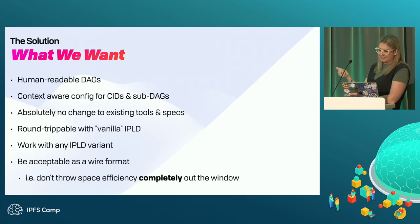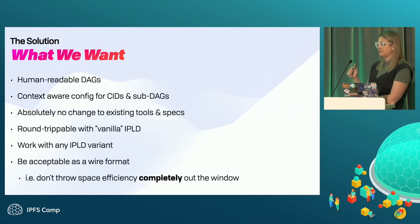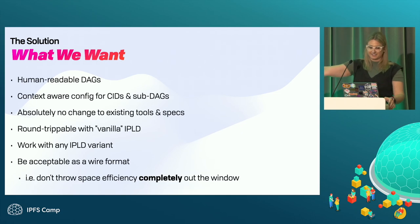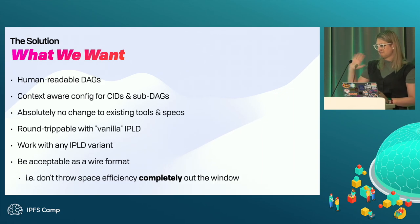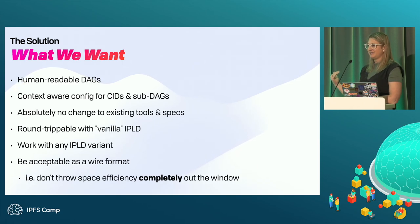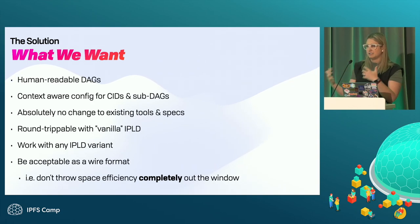So what do we want? Human-readable DAGs. Context-aware configuration for the CIDs and sub-DAGs, so I don't have to make that decision upfront as soon as I want to create a link. I want absolutely no changes to the tools and specs for the rest of the ecosystem — this should layer on top and make zero changes. I want this round-trippable with vanilla IPLD — DAG-JSON, DAG-CBOR, DAG-PB, DAG-YAML if somebody decides to go there. It should be acceptable as a wire format; car files will always be the most efficient, but it should be reasonable to use it in an HTTP header or similar.